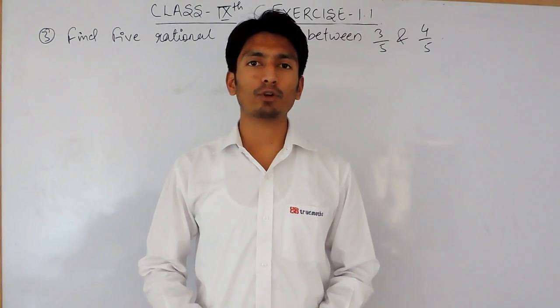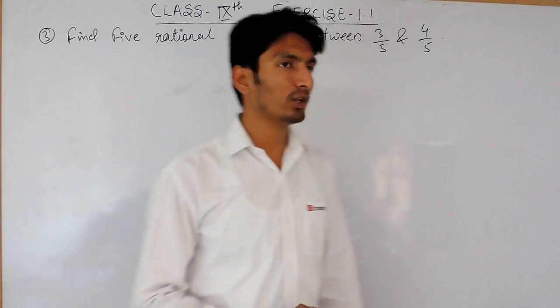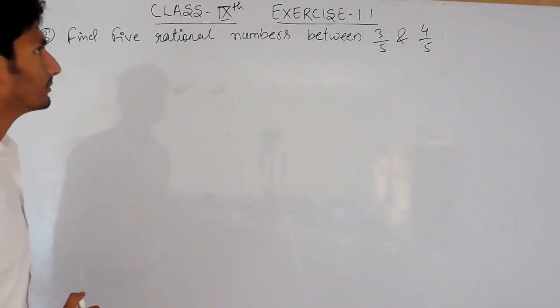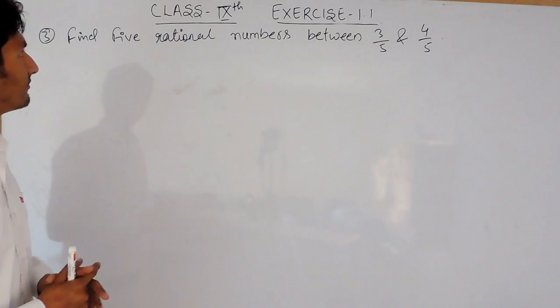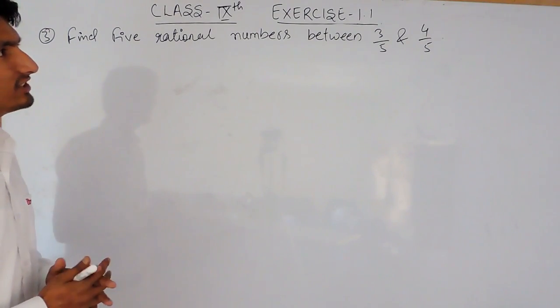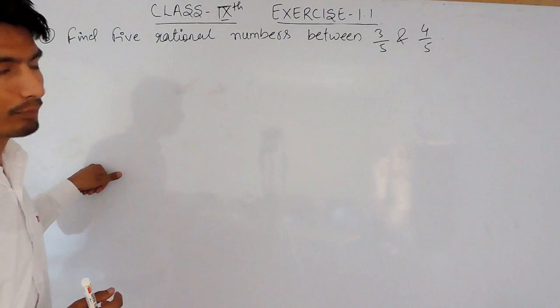Hello everyone, we are from True Maths and in this video we are going to solve Question No. 3 of Exercise 1.1. The question says you have to find 5 rational numbers between 3 upon 5 and 4 upon 5.